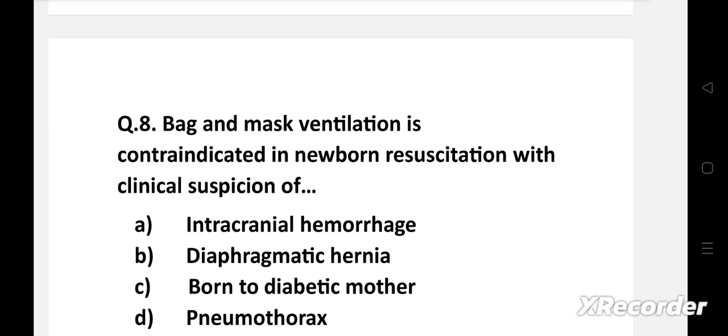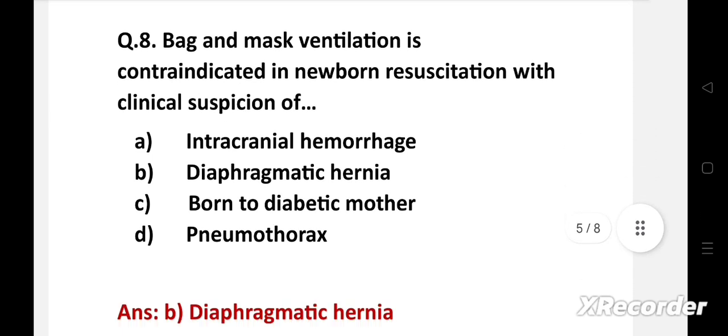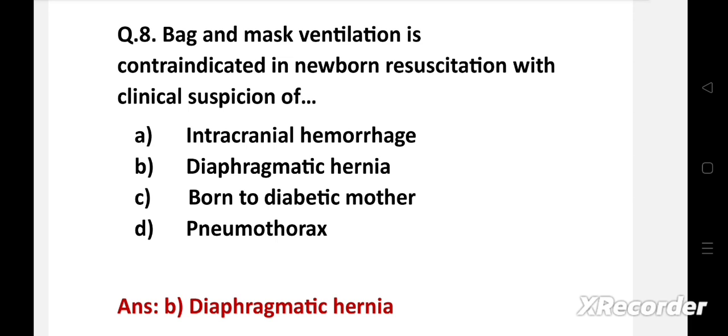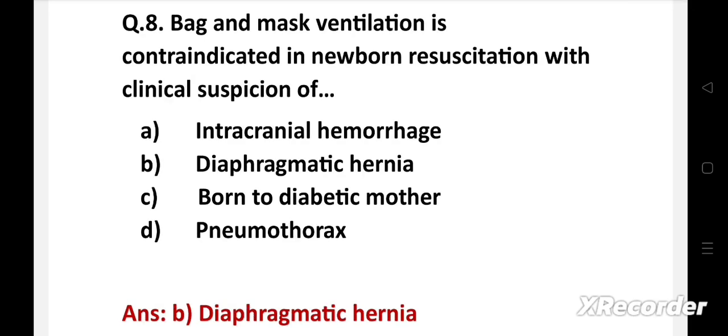Bag-and-mask ventilation is contraindicated in newborn resuscitation with clinical suspicion of — option A: intracranial hemorrhage, B: diaphragmatic hernia, C: born to diabetic mother, D: pneumothorax. Right answer is option B: diaphragmatic hernia. Diaphragmatic hernia is the contraindication for bag-and-mask ventilation because it further increases intrathoracic pressure and respiratory compromise. Another contraindication is infants born through meconium-stained liquor.